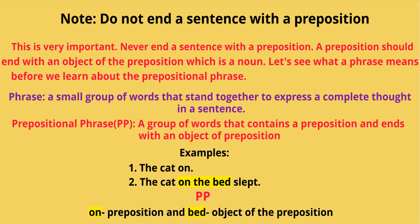Now let's look at an example. 'The cat on' — my sentence ended with 'on,' which is a preposition. Does it make sense? You don't have any extra information about the cat, so it is a fragmented sentence. Now look at the second sentence: 'The cat on the bed slept.' Where is the cat? On the bed. What is it doing? It slept. So 'on the bed' is the prepositional phrase — 'on' is the preposition and 'bed' is the object of the preposition.